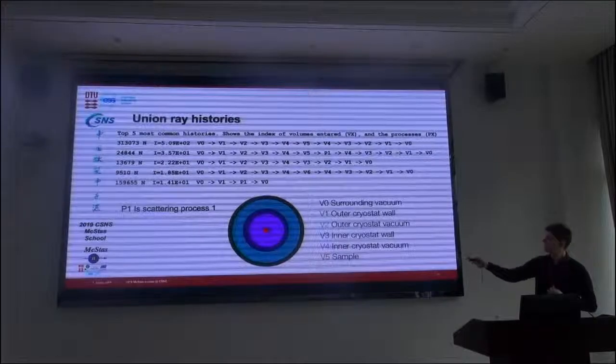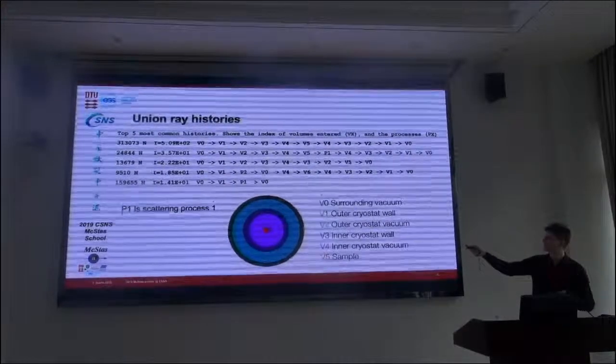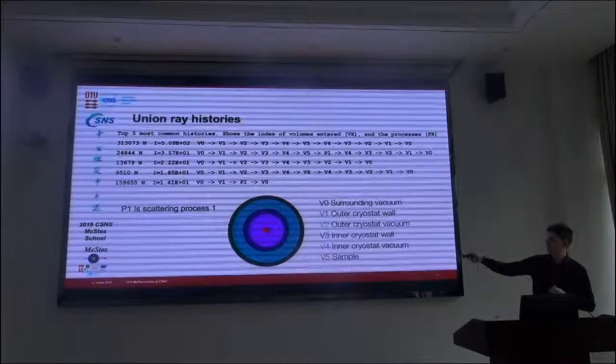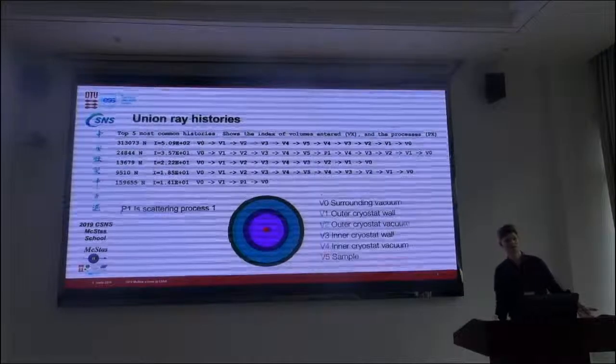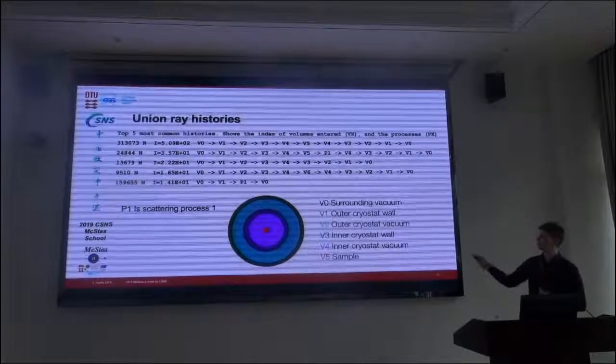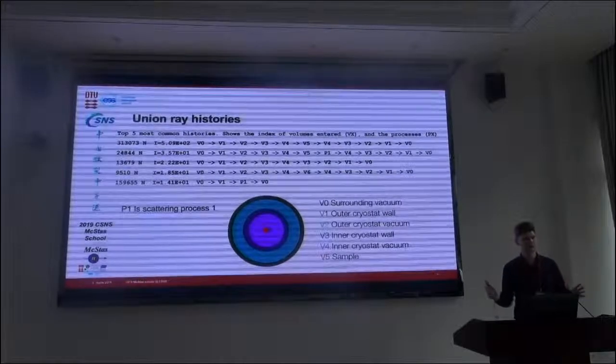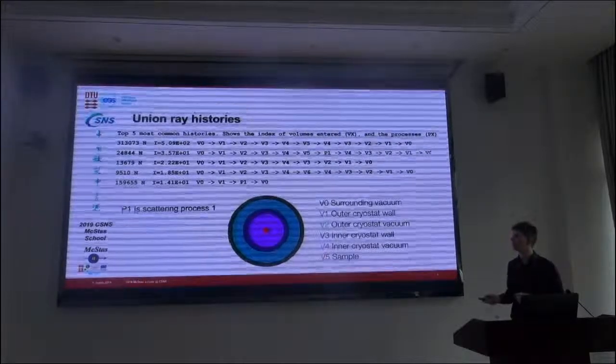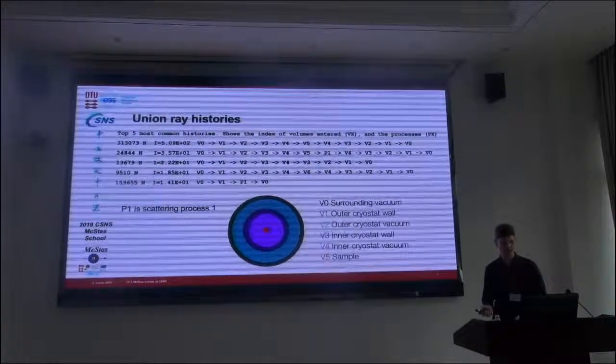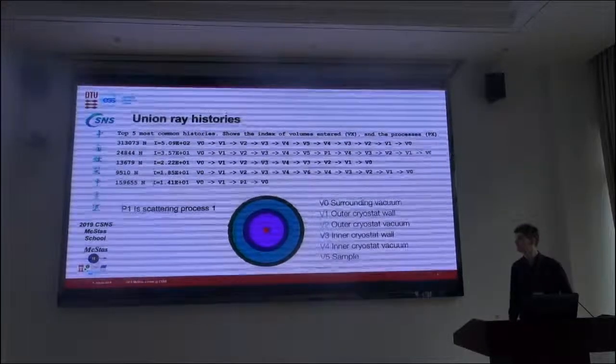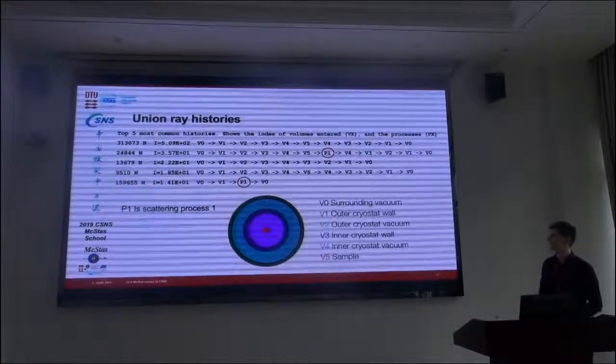And then the others are less important. One misses the sample. Another one goes through a little aluminum, and I have put in the sample. And here the last one actually just scatters in the outside part of the sample environment. So you can use this to get an idea about where your statistics went when you simulated something with the union component.